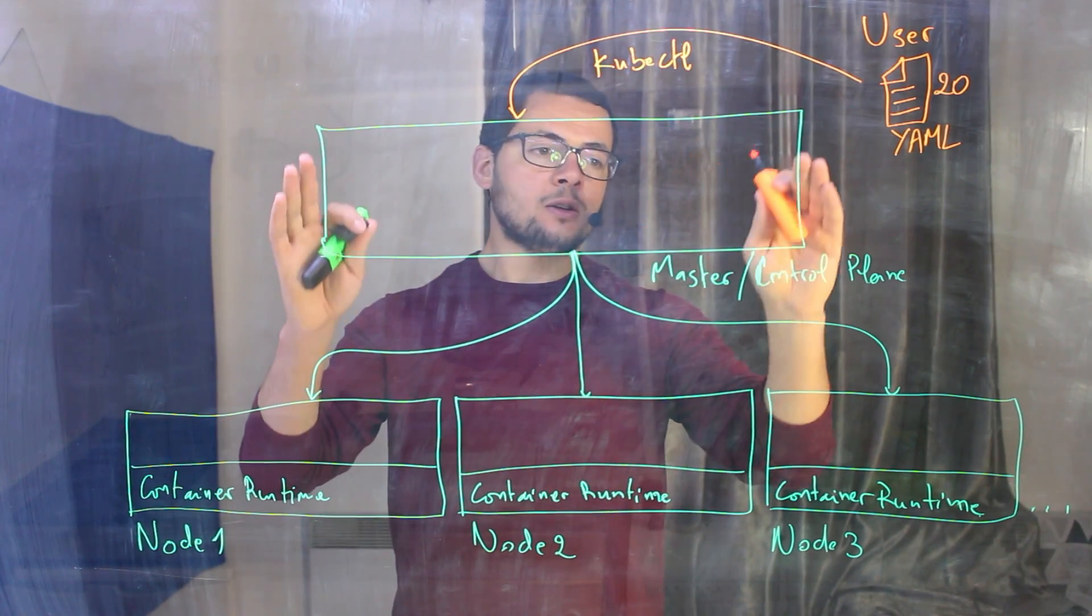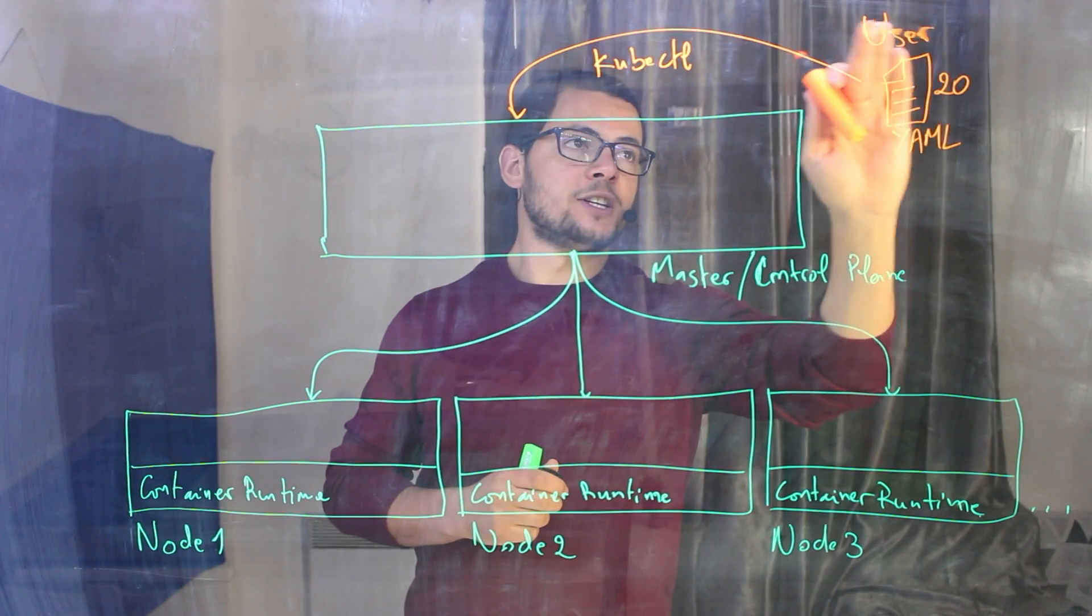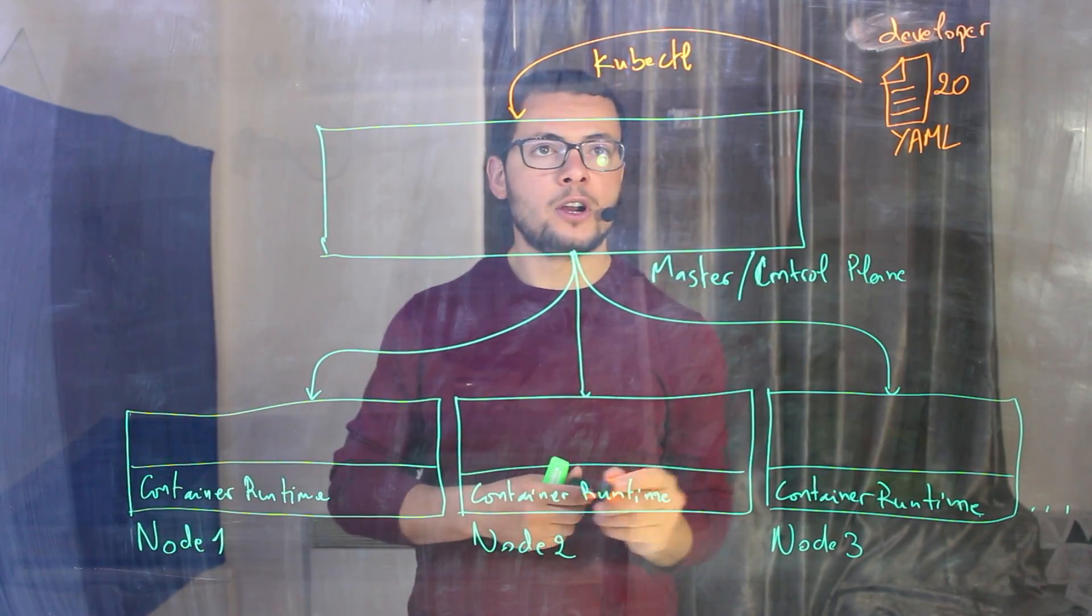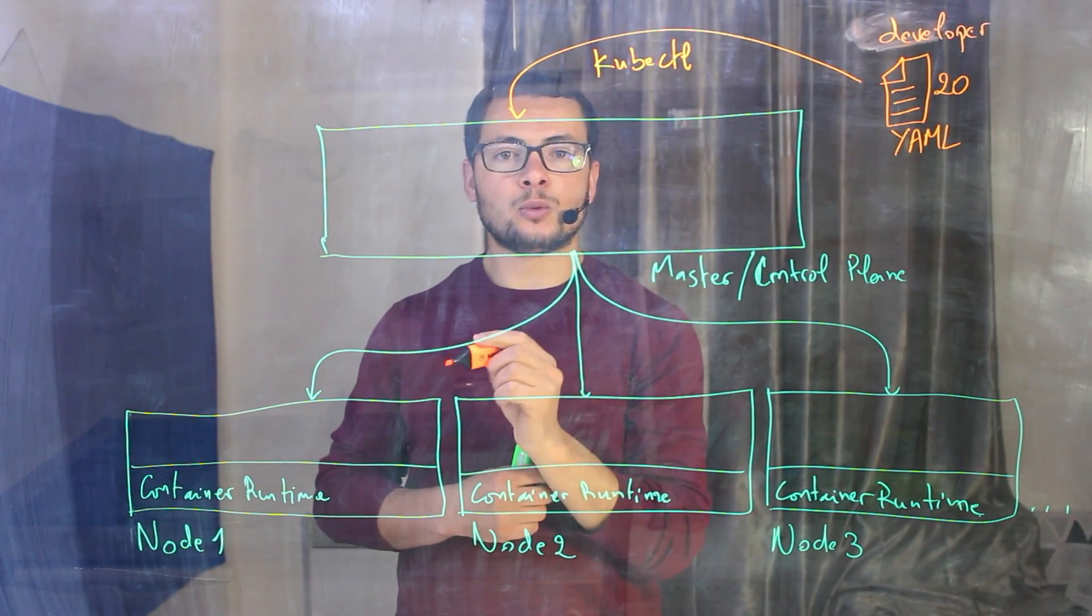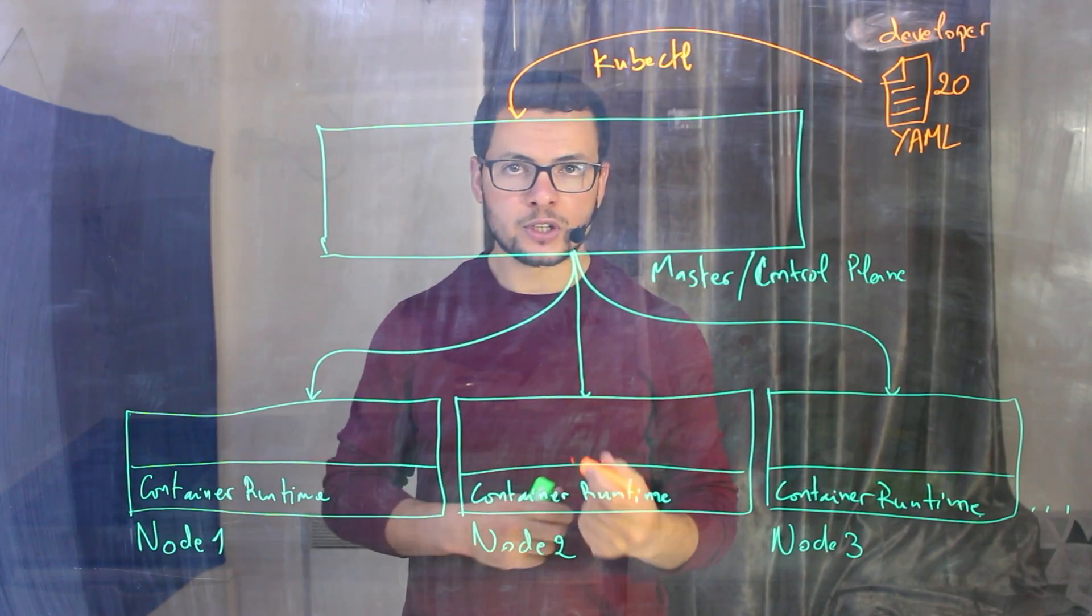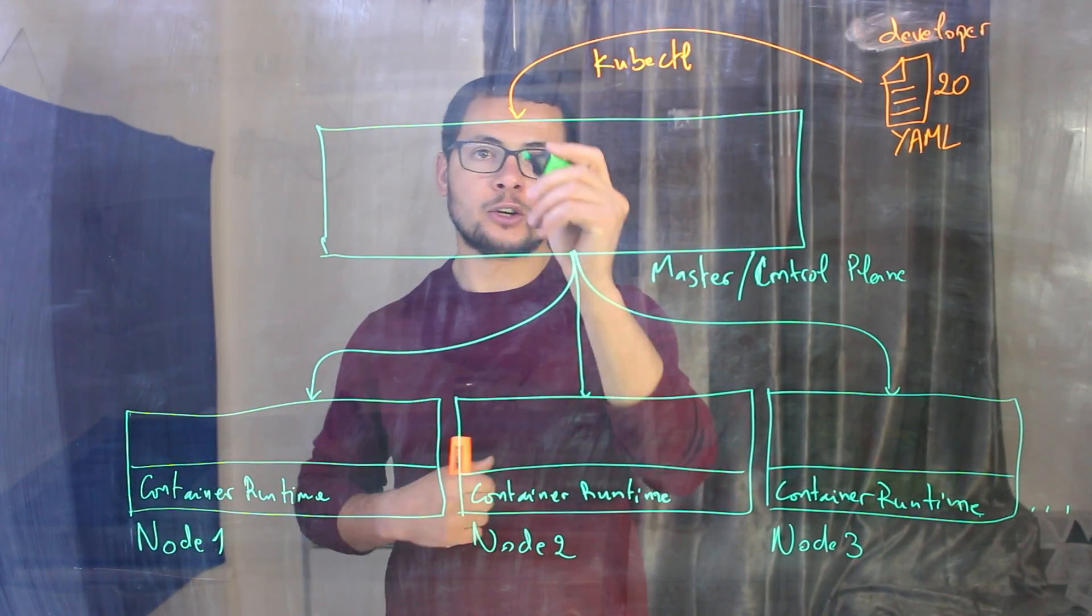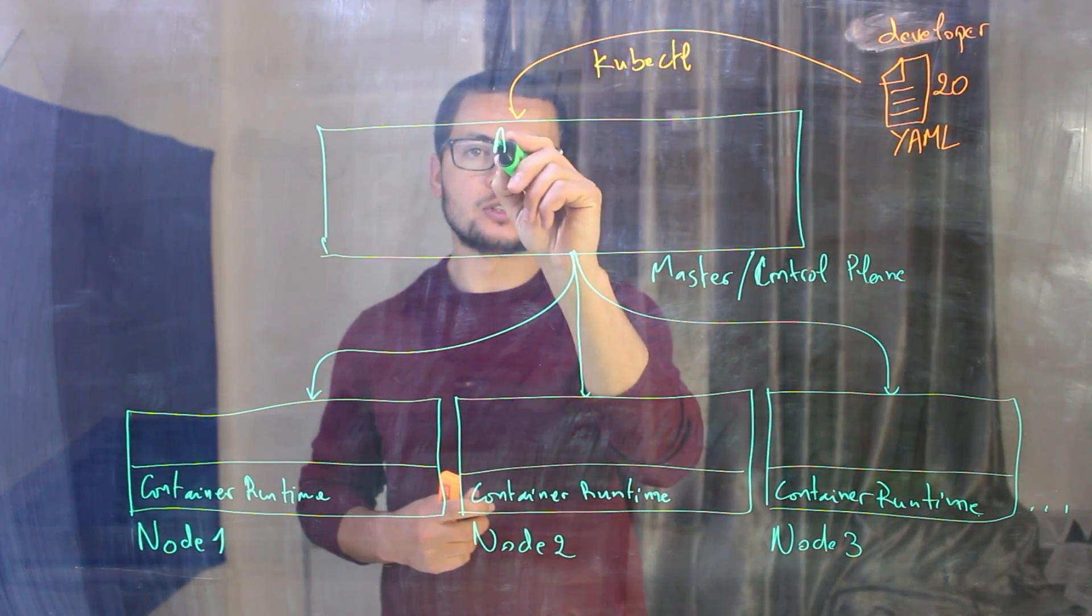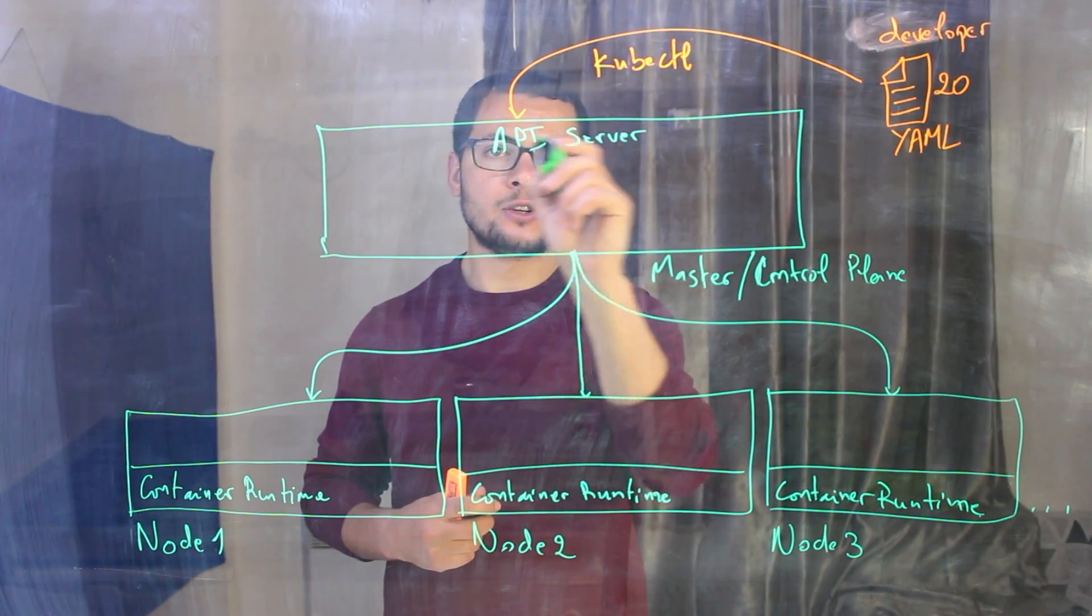So when the control plane will receive this request from the developer, actually here this should be my developer, not my user. So when the control plane will receive that request, it will try to run it against the different nodes. So we'll have a component here that will get that request, which is here the API server. So we'll have the API server sitting right here.